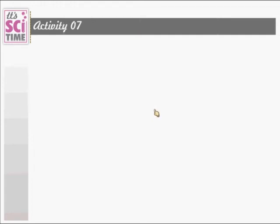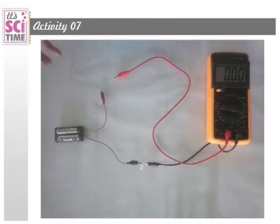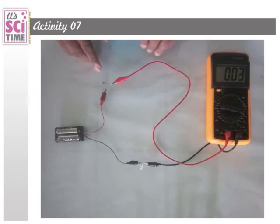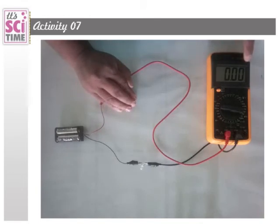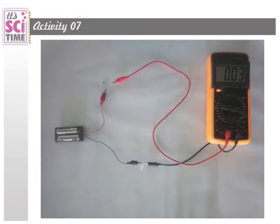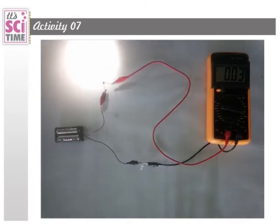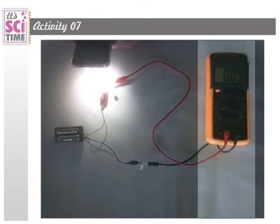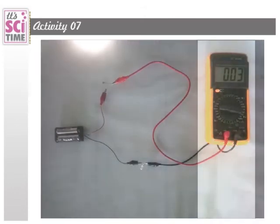Activity number 7 is to understand the function of the LDR. We connect the LDR to the two terminals in the circuit. With ambient light a small current of 0.3 flows. When I cover it the current becomes 0 — in darkness, current is zero. When light falls on the LDR more current flows; focusing a light over it gives 0.09–0.10. When I move the light away the current decreases again.